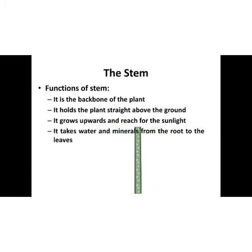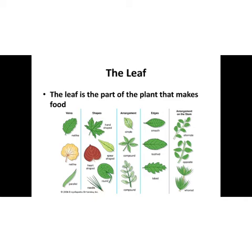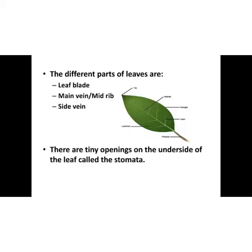Now, let us learn about the other parts of a shoot. The next part is the leaf. Can you all go out and collect some leaves? Are all the leaves of same size and shape? No, isn't it? Leaves are of different shape and size. What is the function of a leaf? The leaf is the part of the plant that makes food for the plant. Now, let us study about the different parts of the leaf.